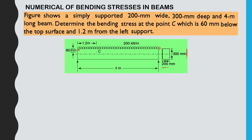The beam length is 4 meters. Point C is located 60 mm below the top surface and 1.2 meters from the left support. The loading is 200 kN per meter, meaning for every 1 meter, 200 kN is applied.